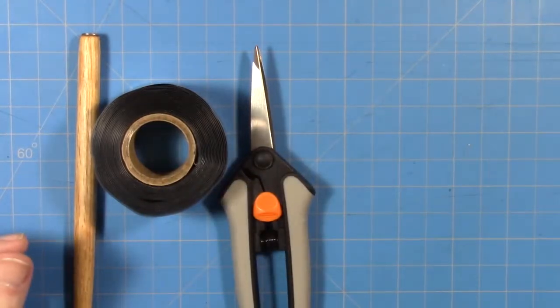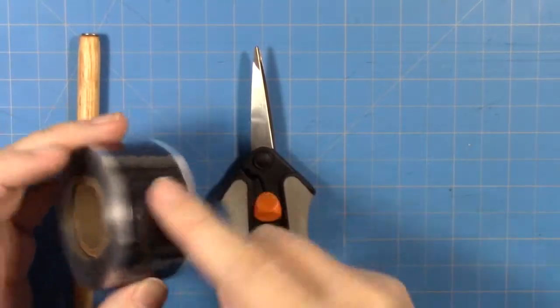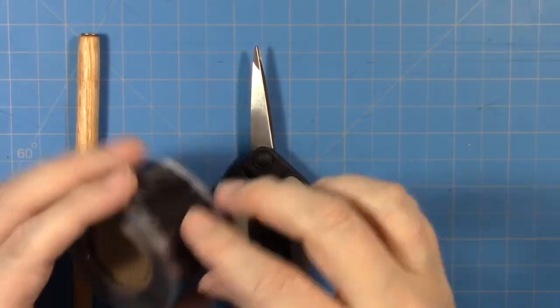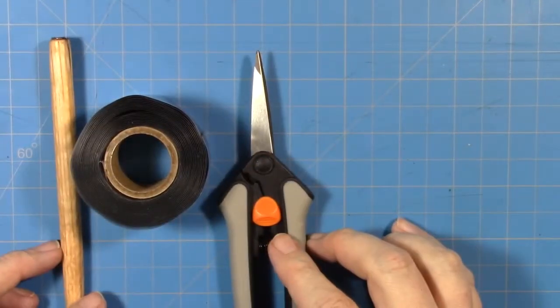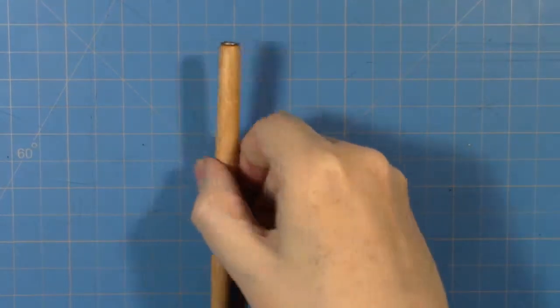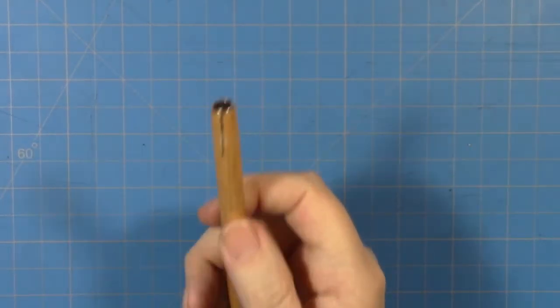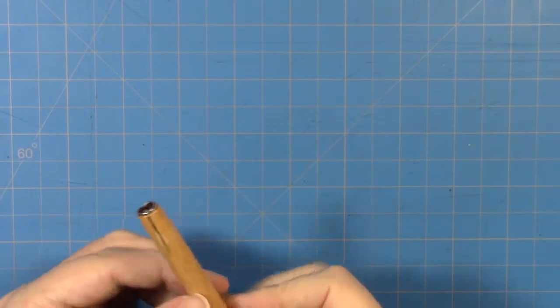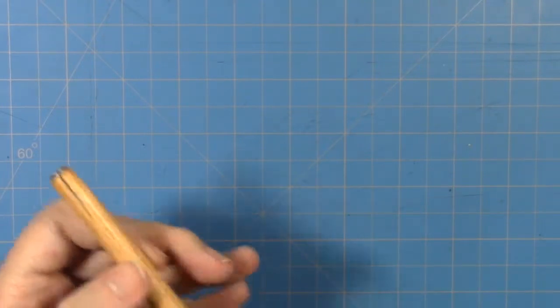But basically, it's pretty simple. So all you have to do is wrap the tape around and overlap it. And we'll do that right now, right after the break. Okay, the first thing we're going to do is measure out enough tape to cover the bottom part of our holder.